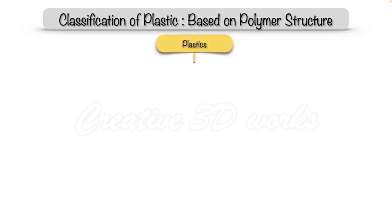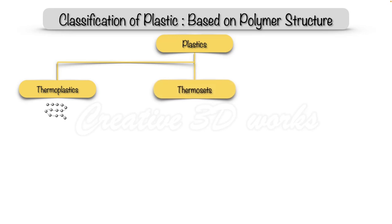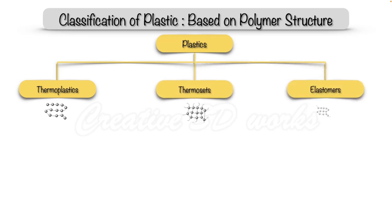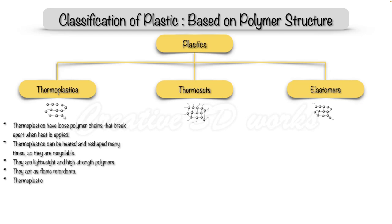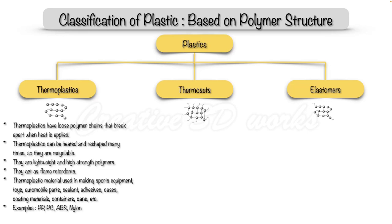Now let's see the classification of plastic based on the polymer structure. They are divided into three types: thermoplastics, thermosets, and elastomers. The thermoplastics have loose polymer chains that break apart when heat is applied. Thermoplastics can be heated and reshaped many times, so they are recyclable. They are lightweight and high-strength polymers that act as flame retardants. Thermoplastic materials are used in making sports equipment, toys, automobile parts, sealants, coating materials, containers, cans, etc. For example: PP, PC, ABS, nylon.